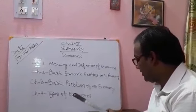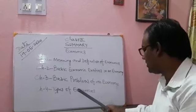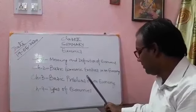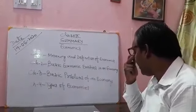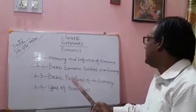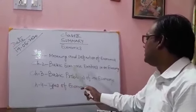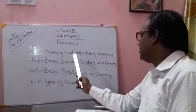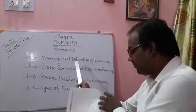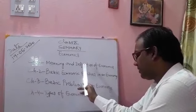Regarding the definition of economics, there are basically four definitions: the wealth definition, welfare definition, specific definition, and growth definition. These definitions have been discussed in detail with their merits, demerits, and features. You can see the video, study it, analyze it, and make notes of your own, because this chapter is very important as far as the definition of economics is concerned. So in the first chapter, you have to study two key points: economic and non-economic activities, and the four definitions of economics.